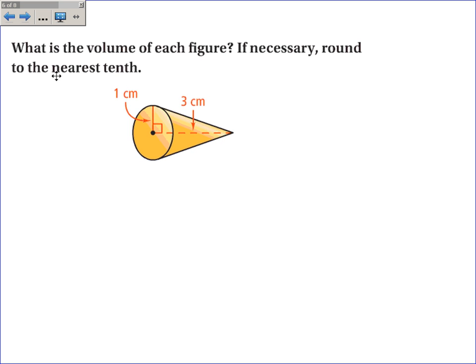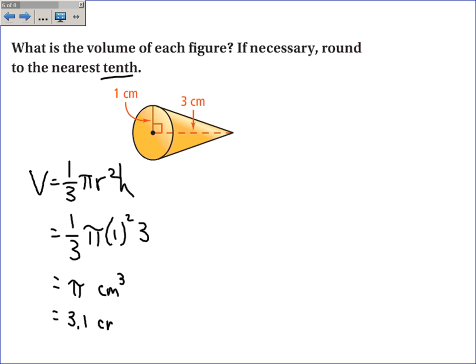What is the volume in this figure round to the nearest tenth? So the volume is one-third pi r squared h. The radius is one, and the height is three. So if you simplify this, you just get pi centimeters cubed, and they want it to the nearest tenth. And so it's going to be 3.1 centimeters cubed.